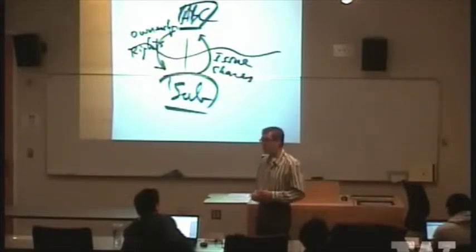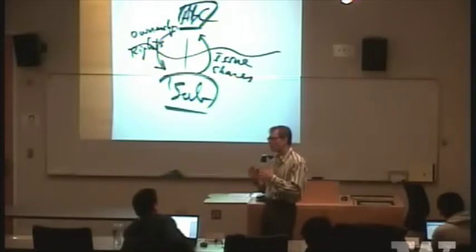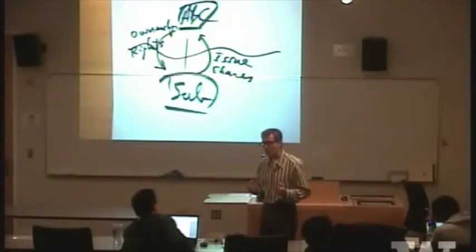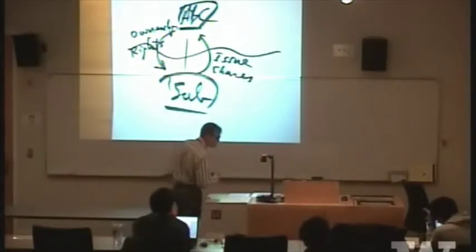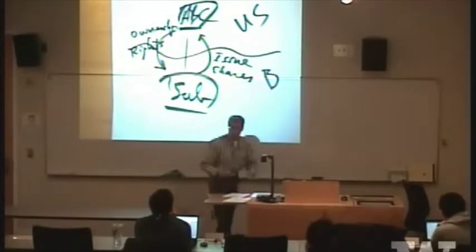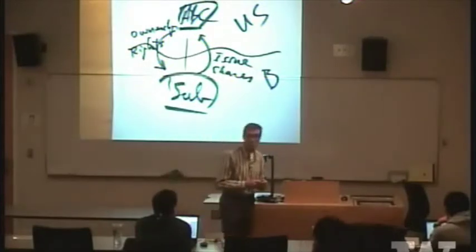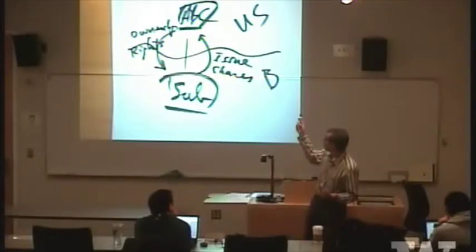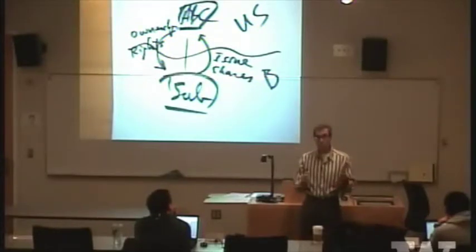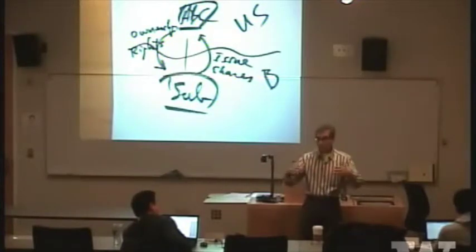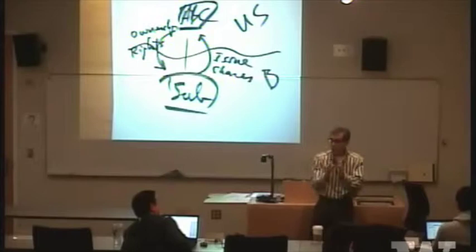When you ask whether it's taxable, you also have to ask which government might tax it. Let's say ABC is in the U.S. and the subsidiary is in some Country B. You need to ask for both countries whether there is any tax consequence. For ABC, transferring an asset and receiving another asset — the shares — is that normally a taxable transaction under general United States tax law? The general rule is that an exchange is a taxable event.